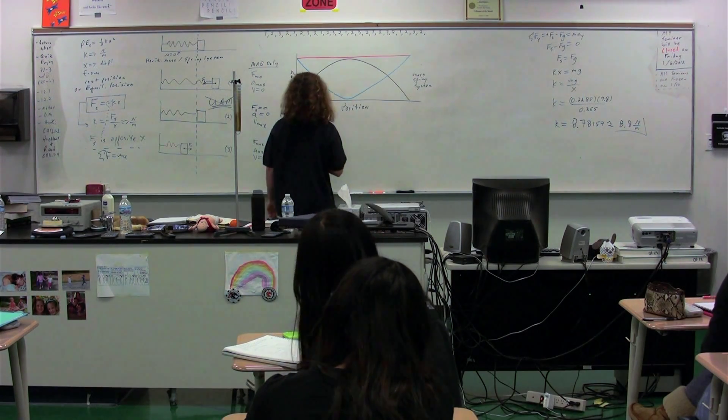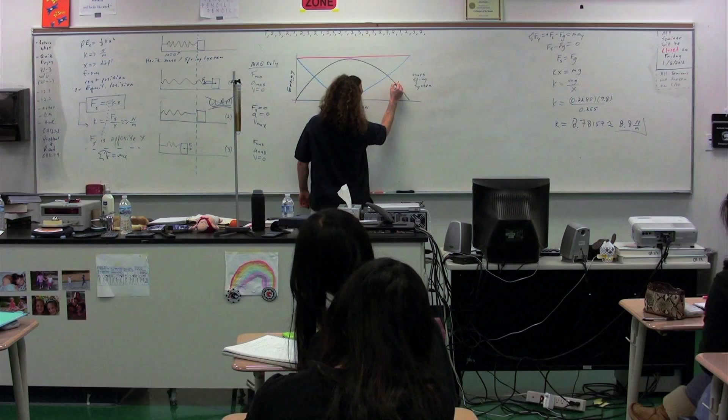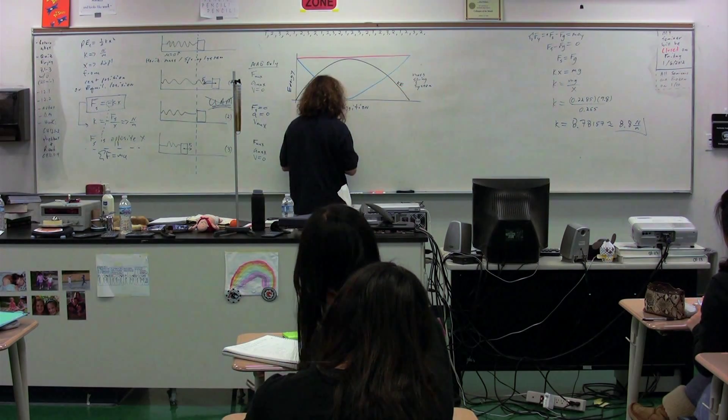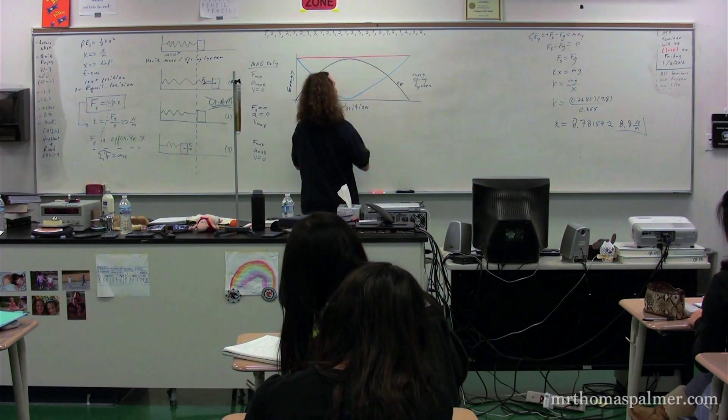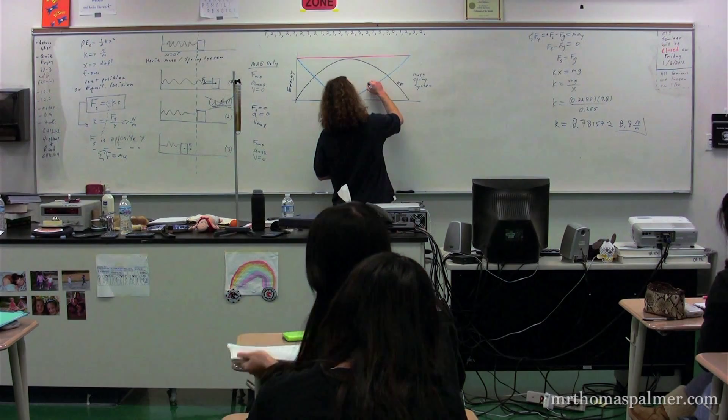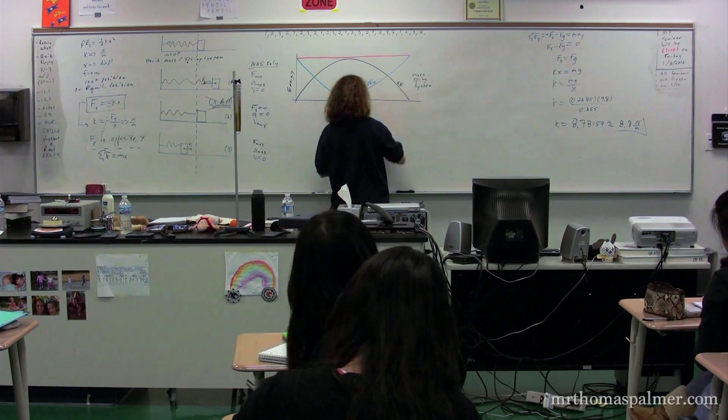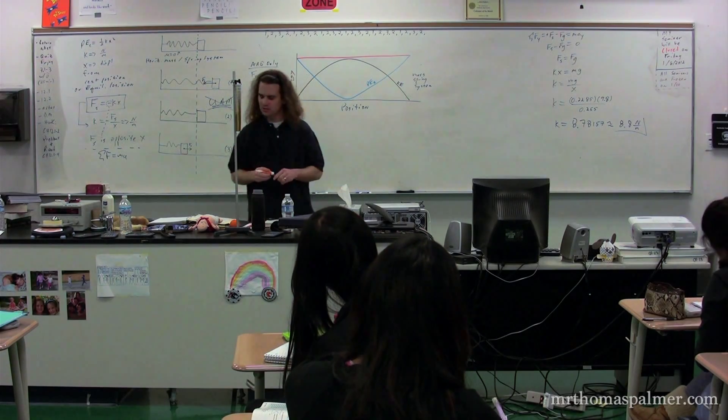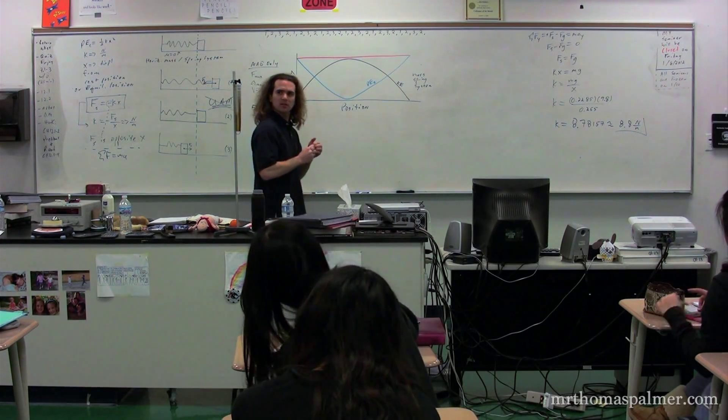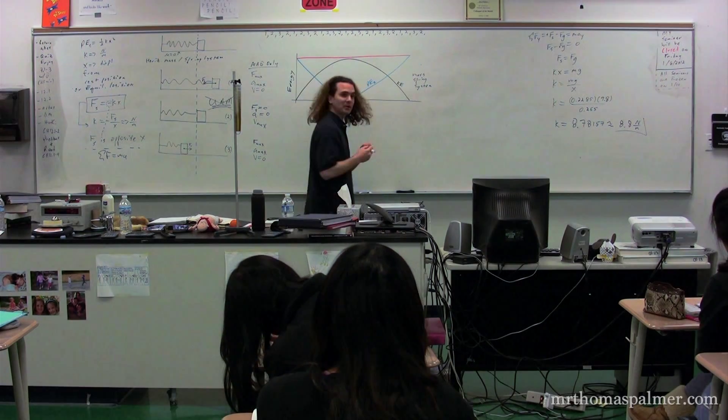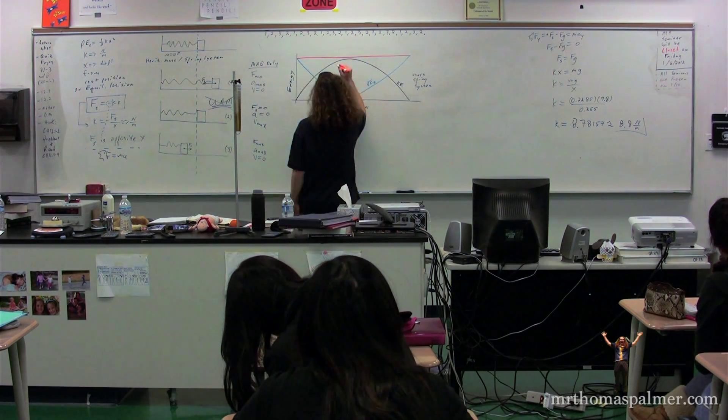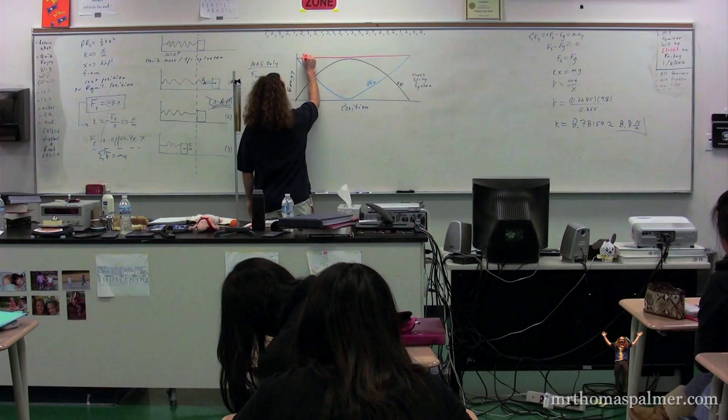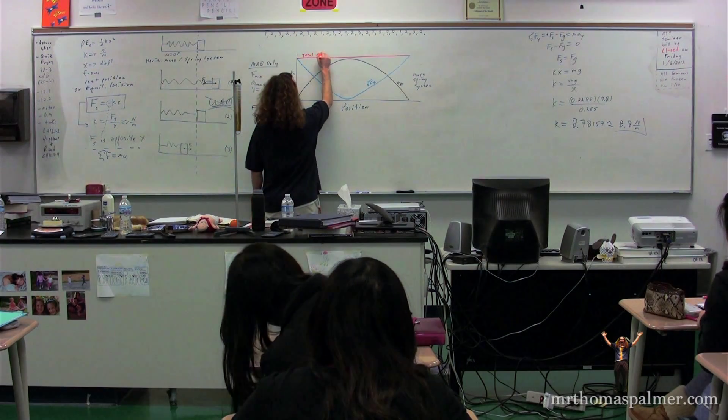The black line represents the kinetic energy. The blue line represents the elastic potential energy. And the orange line—what is it labeled? Is it total energy or total mechanical energy? Okay, the one on the top here is labeled total mechanical energy.